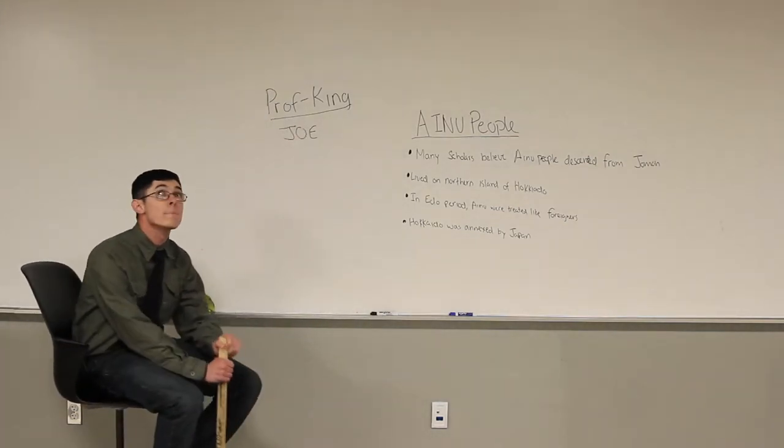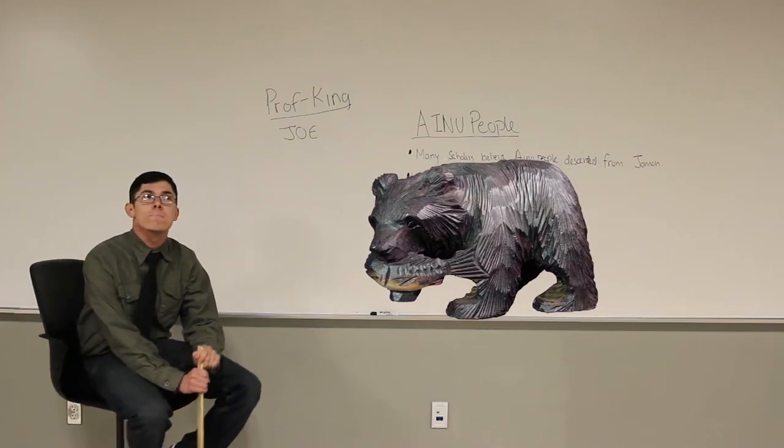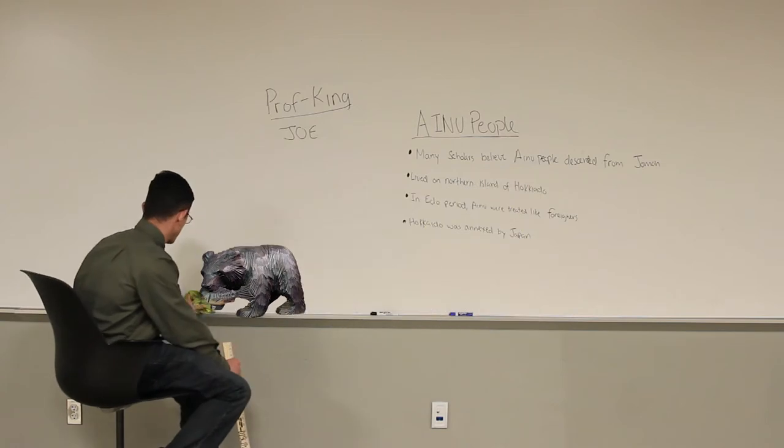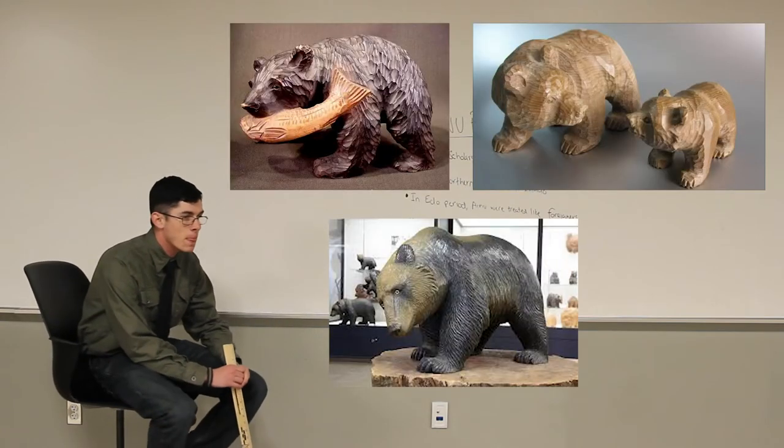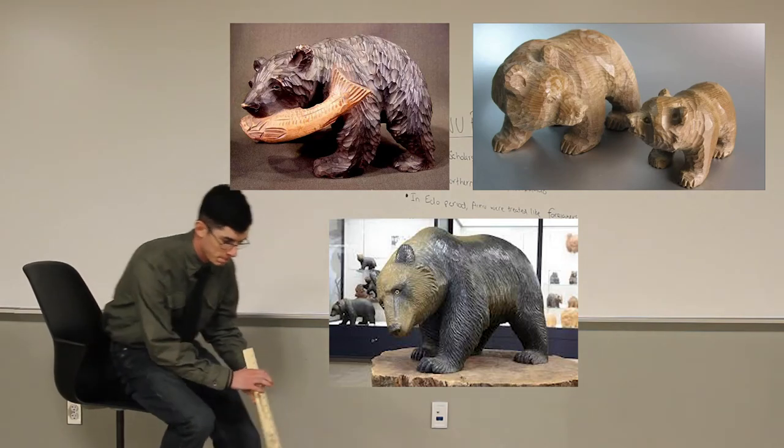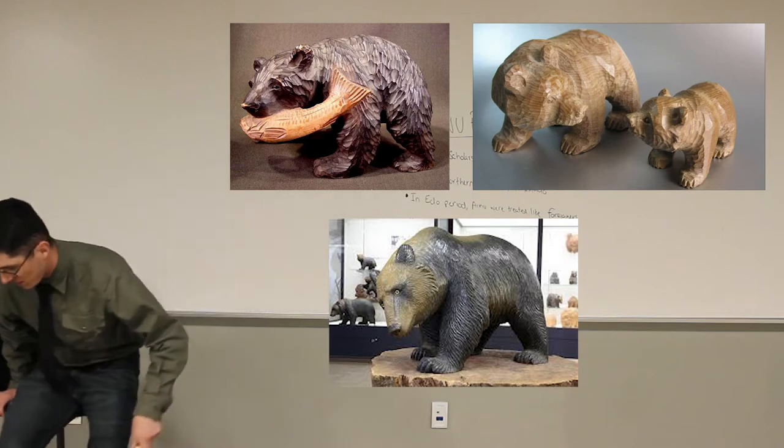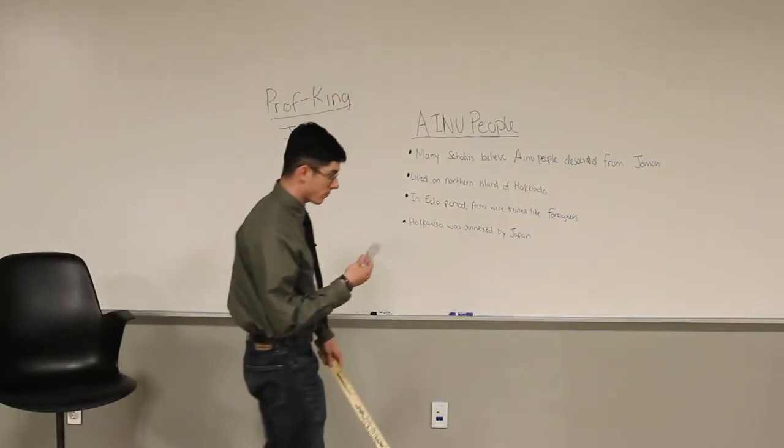The Ainu people of Hokkaido created wooden bear carvings. As you can see in the pictures, the most popular style of the carvings is of a bear with a fish in its mouth. The reason why they used wood for the carvings is because wood was their best resource at the time. The Ainu people admired the bears. They were used to provide food, and their fur and bones were jewels, and they even kept the bears as pets.